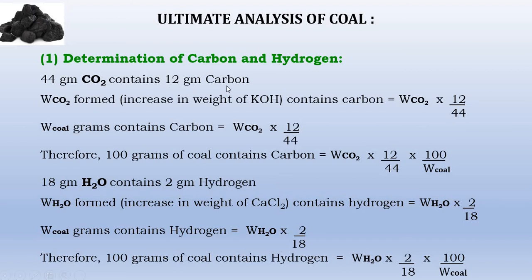44 grams of carbon dioxide contains 12 grams of carbon. Therefore, for W grams of coal, the weight of carbon dioxide obtained, multiplied by 12/44, gives the conversion from carbon dioxide to carbon. The percentage carbon is: weight of CO₂ × (12/44) × (100 / weight of coal).